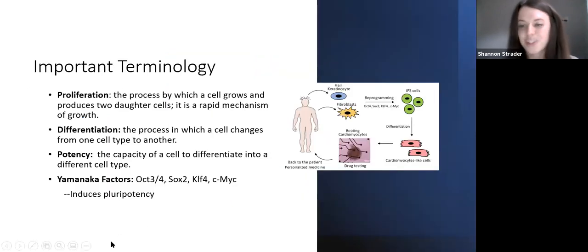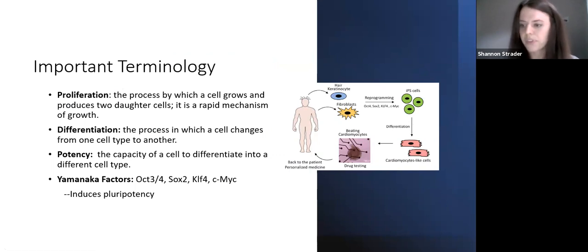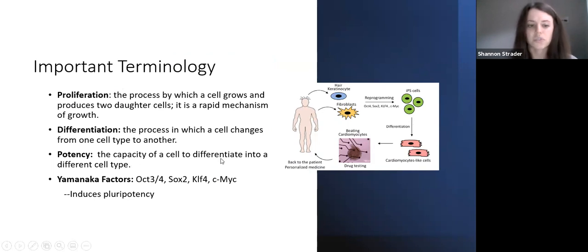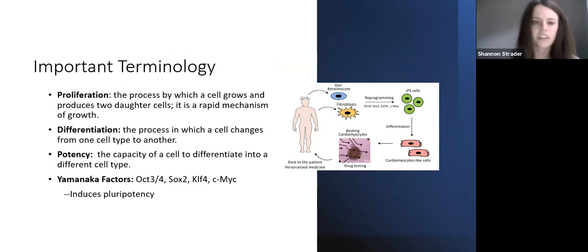Before moving toward clinical applications, there is some basic terminology to understand well. There are four types of stem cells, and it's often based on potency. Potency is the capacity of a cell to differentiate into a different cell type. Differentiation is the process by which a cell changes from one cell type to another, and we all know what proliferation is.